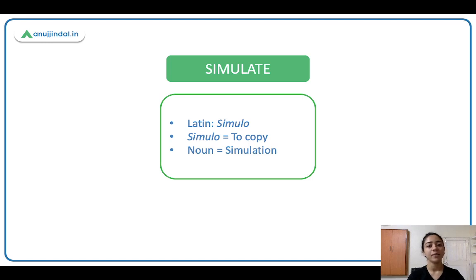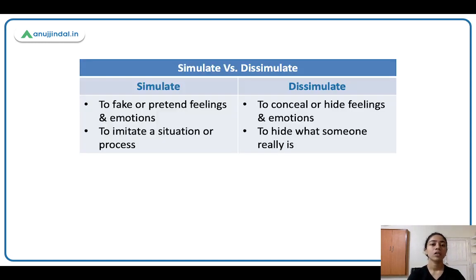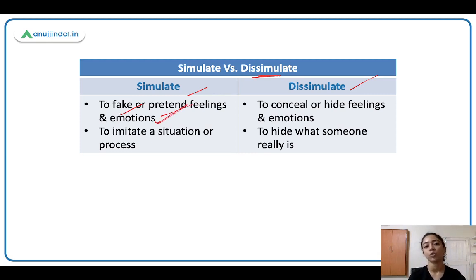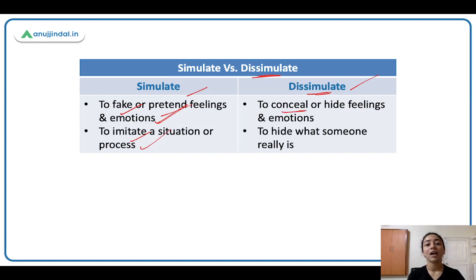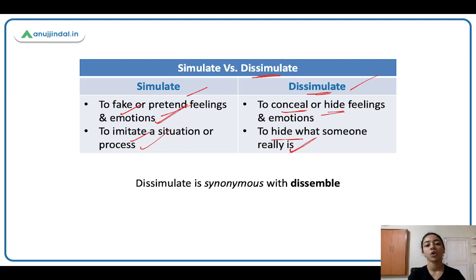Simulate comes from Latin 'simulo,' meaning to copy, to imitate, to duplicate. The noun is simulation. There is another word: dissimulate. Simulate means to fake or pretend feelings or emotions — kuch aur hai lekin dikha kuch aur raha hai, you are faking, you are pretending your emotions. Jaisi in reality you are sad but you are pretending that you are happy. Dissimulate means to conceal or hide feelings and emotions — you are hiding the truth, hiding the reality, hiding your true intentions. Dissimulate's synonym is dissemble — both mean to conceal, to hide.